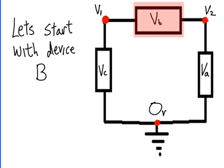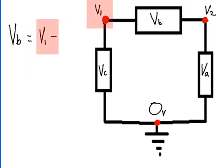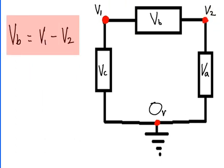Let's start with device B. VB equals V1 minus V2, the other side of device B. VB equals V1 minus V2.